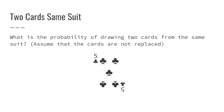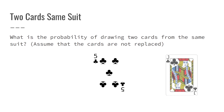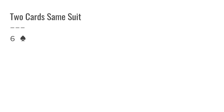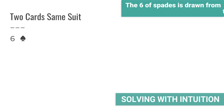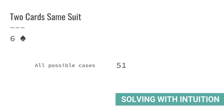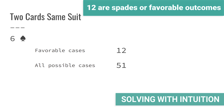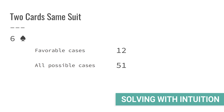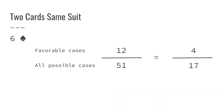Let us try to solve this problem intuitively. We can determine if the two cards match only after the second card is drawn from the deck. After the first card is drawn — let's say the six of spades — there are 51 cards left in the deck, of which 12 are spades. Therefore, there are 12 favorable outcomes out of the remaining 51. Hence, the probability is 12/51 or 4/17.